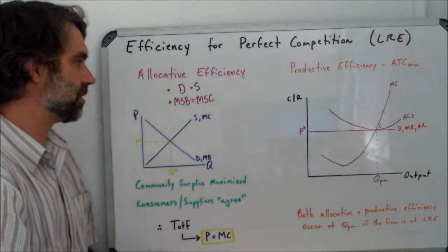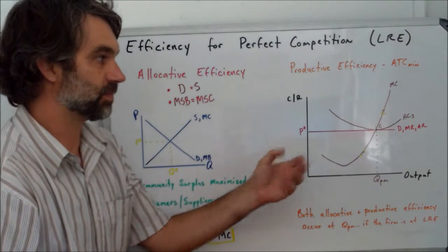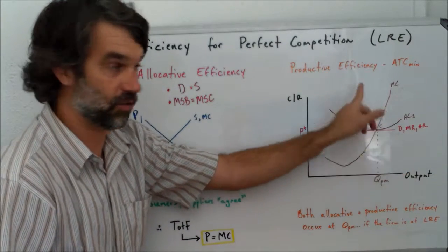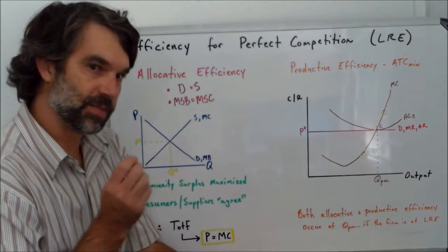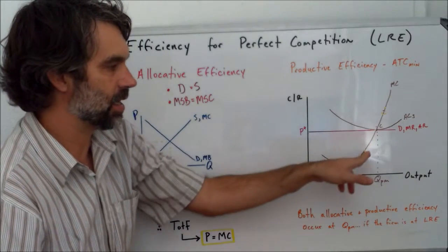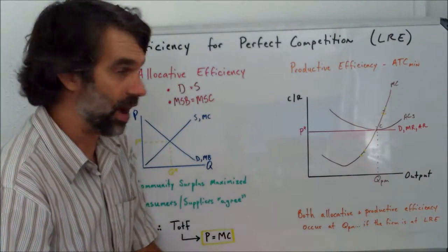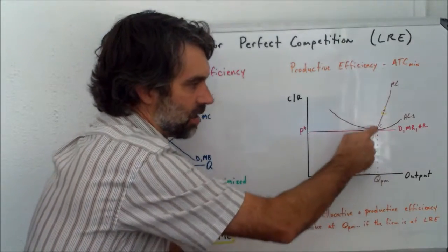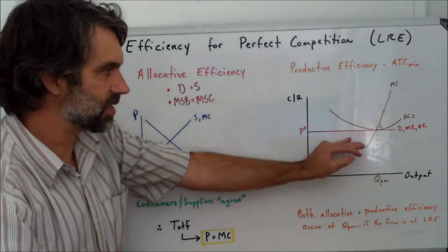One last way to just kind of prove this to you. Remember, we said allocative efficiency happens where demand equals supply. Well, demand and supply have been there the whole time, like we talked about in a previous video. Remember, the demand curve is perfectly elastic for the firm in perfect competition. So that's why we call this D. And remember, we said that the supply curve is the portion of MC that is above average variable cost and that is positively sloped. We don't know exactly where average variable costs are, but let's just say that they're right in there. So now this is the supply curve and that's the demand curve. And we're producing where the two of them converge or intersect.